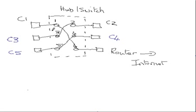Switches have better throughput than hubs normally, but it does depend on your network and how the network is configured. If the main activity is that the computers connect out to the router and to the internet, then you won't get any better throughput with a switch than with a hub. However, if the devices do actually talk to each other as well as talking to the internet, then the switch will give you better throughput and your network will be quicker.